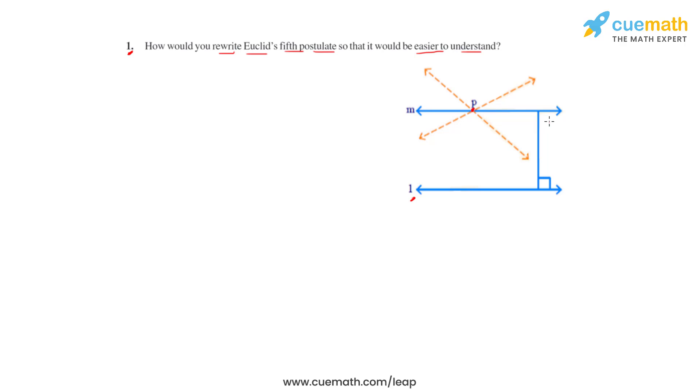By parallel we mean that the distance between these two lines remains the same always, it remains constant. So the distance is same everywhere, that means line L and line M do not meet anywhere, or we can say that these two lines never intersect with each other.